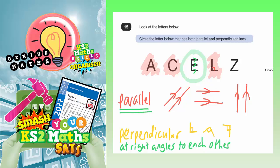And letter Z — well, there are no right angles on letter Z. This angle here is not a right angle, that's an acute angle. And this angle here is also an acute angle. So it can't be letter Z because there are no perpendicular lines.